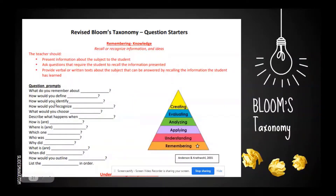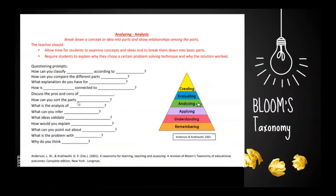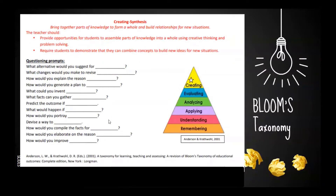Let's look at three different ways to get higher order thinking questions. First, Bloom's Taxonomy categorizes questions into remembering and understanding, applying and analyzing, and finally evaluating and creating. You could start with remembering and understanding — for example, 'How would you define?' But you'd really like to progress to analyzing and applying, or even evaluating and creating — such as 'What is the analysis of?', 'What can you infer?', or 'What could you invent? What facts can you gather?'